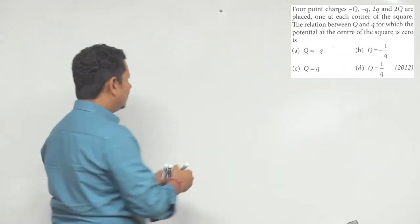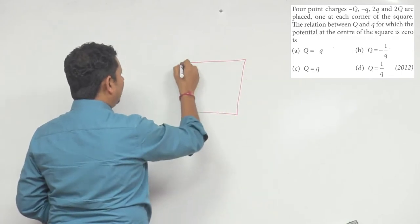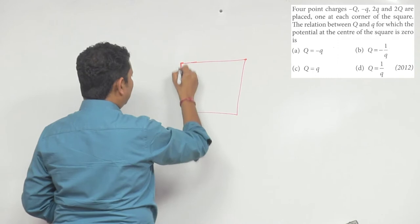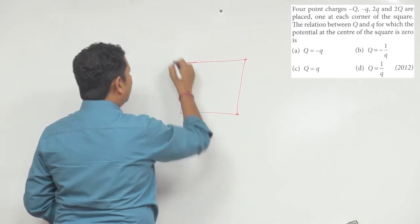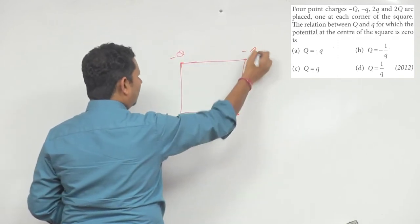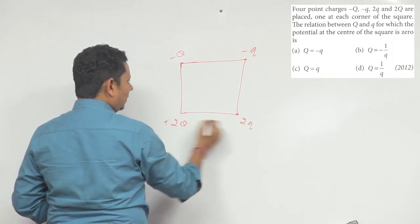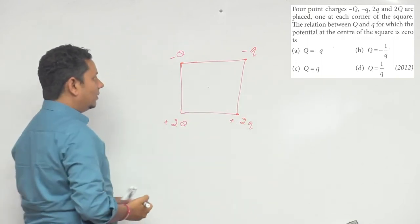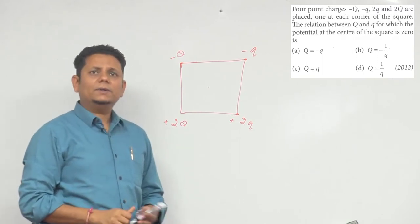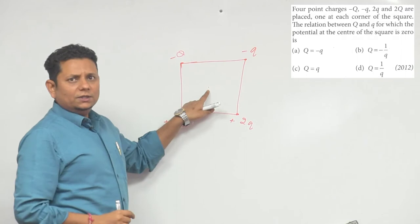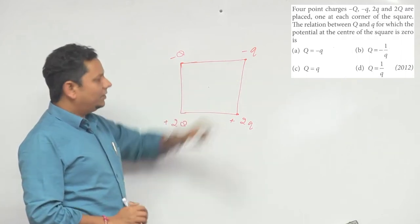Very simple question. The scenario is that you have a square configuration with four corners. This is minus capital Q, minus small q, 2 small q, and 2 capital Q plus. These four charges are placed at the corners. This is the center where the potential is zero.